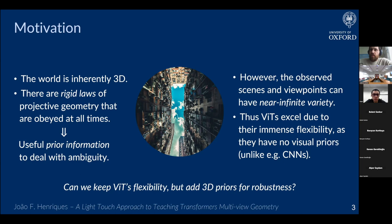The motivation for this work is that the world is inherently 3D — we observe a 2D projection of our 3D surroundings, and there are very rigid laws of projective geometry obeyed at all times. This should provide useful prior information to deal with ambiguities. The observed scenes and viewpoints can have near-infinite variety, which seems to wash over these rigid laws, but they are still there. It's counter-intuitive that VITs excel with such immense flexibility and no priors like CNN translation equivariance.